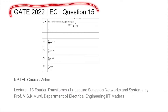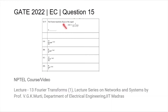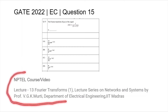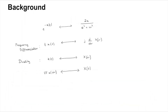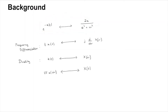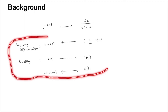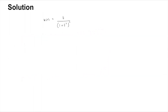This is question 15 from the GATE 2022 EC paper, where we are given a signal x(t) and asked to find its Fourier transform X(jω). Underneath the question you will find the title of the NPTEL course or video relevant to this topic. To solve this question you need to know the standard Fourier transform of e^(-a|t|) and the Fourier transform properties of frequency differentiation and duality.